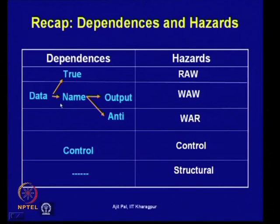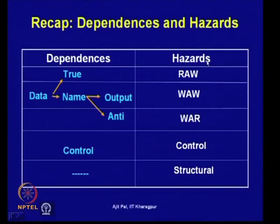We also discussed name dependences, which have two varieties: output dependences and anti-dependences. Output dependences lead to write-after-write hazards and anti-dependences lead to write-after-read hazards. Both can be overcome using register renaming, done either by the compiler or by hardware, as in Tomasulo's algorithm.